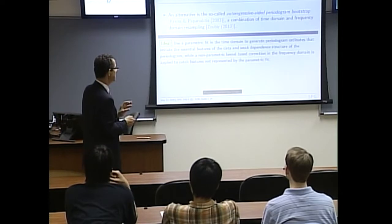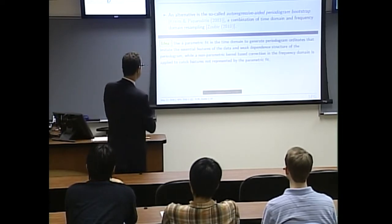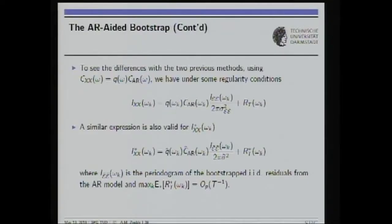The idea: write the spectral function as q(ω) times an autoregressive spectrum. The AR spectrum captures the weak dependence. We estimate q, and C_AR-hat is obtained via an autoregressive fit. We gain bootstrap periodograms this way, and this method works much better. You could argue why AR if data is not autoregressive — any linear process model would do: moving average or ARMA.